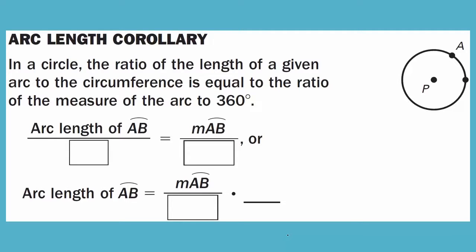Arc length corollary: in a circle, the ratio of the length of a given arc to the circumference is equal to the ratio of the measures of the arc to 360 degrees. To find the arc length of arc AB, take the measure of arc AB over 360 degrees, times the entire circumference of the circle, which is 2 pi R. It's part over whole times the circumference of the circle, since we're looking for length.